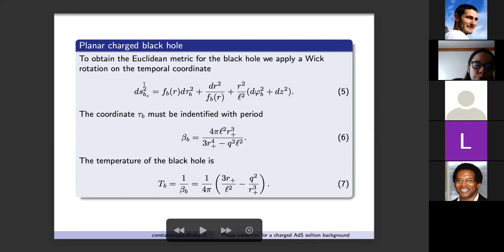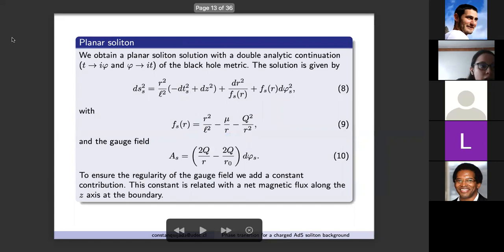To obtain the Euclidean metric for the black hole we apply a Wick rotation on the temporal coordinate and we obtain expression five. The regularity of the Euclidean metric demands that the coordinate tau_b be identified with period beta_b given by equation six. The period beta_b is the inverse of the temperature, so the temperature of the black hole is equal to the right hand side of equation seven.